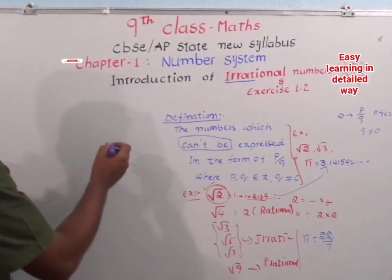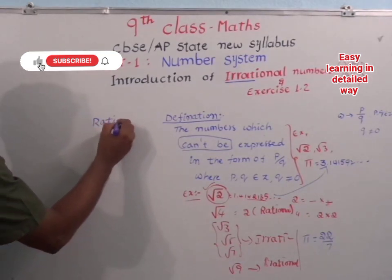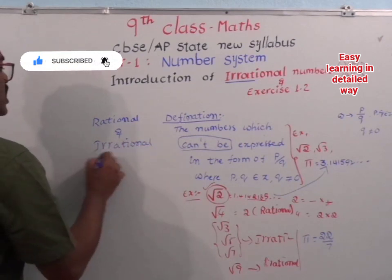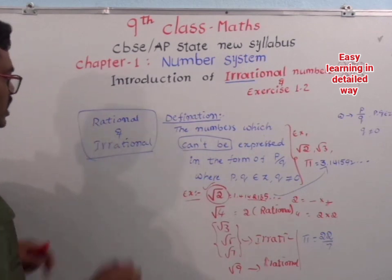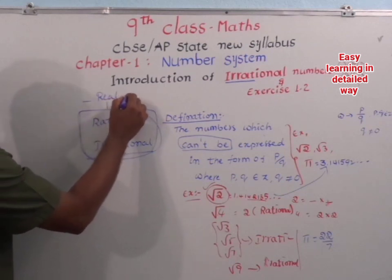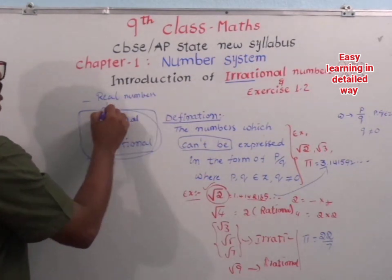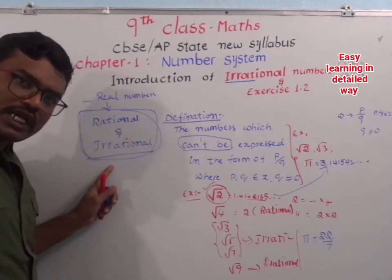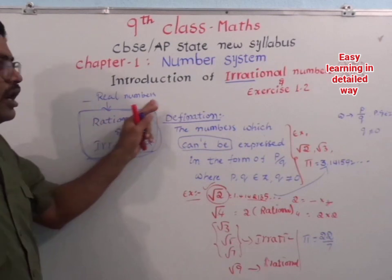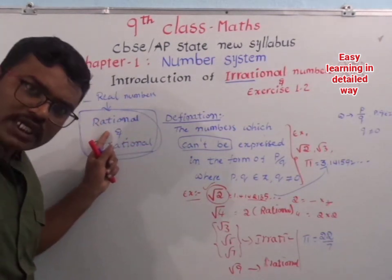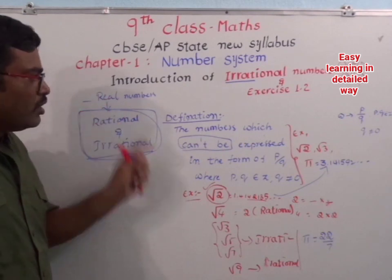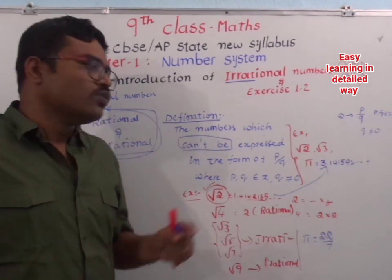So far we discussed rational numbers and also irrational numbers across two videos. These are real numbers — rational numbers and irrational numbers together form real numbers. Rational numbers are also real numbers. Now let's begin Exercise 1.2.